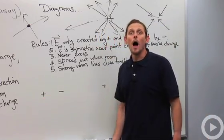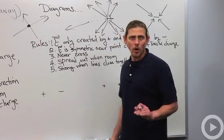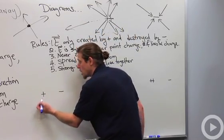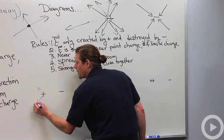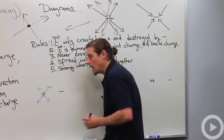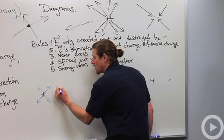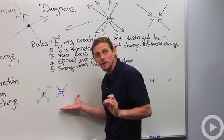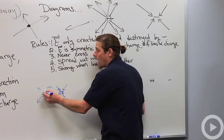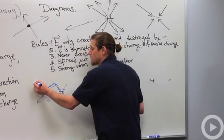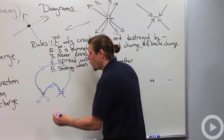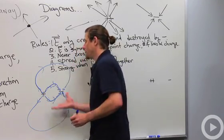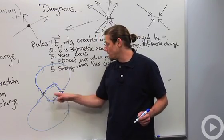Let's draw a simple one: a positive charge and a negative charge. Near the positive charge, electric field lines come out symmetrically. Near the negative charge, field lines go in symmetrically. To complete the diagram, we connect them — field lines curve from the positive charge around to the negative charge. That's the electric field line diagram for a positive and a negative charge.